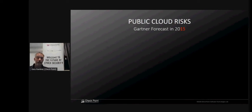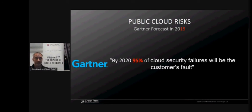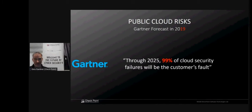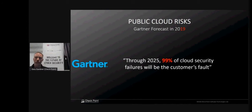Back in 2015, Gartner stated that by 2020, 95% of cloud security failures would be the customer's fault. Gartner updated this in 2019, saying by 2025 it will be 99% of cloud security failures are the customer's fault. This isn't done maliciously — it's due to a lack of understanding of how cloud environments should be secured.